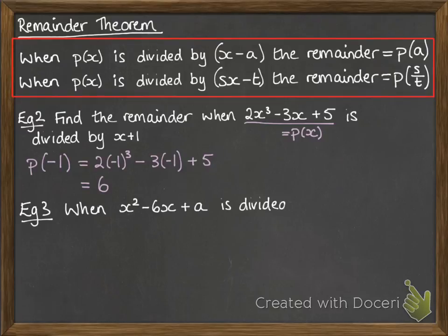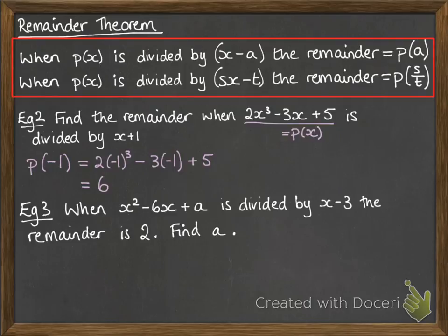Let's look at another one. When x² minus 6x plus a is divided by x minus 3, the remainder is 2. We want to find the value of a.